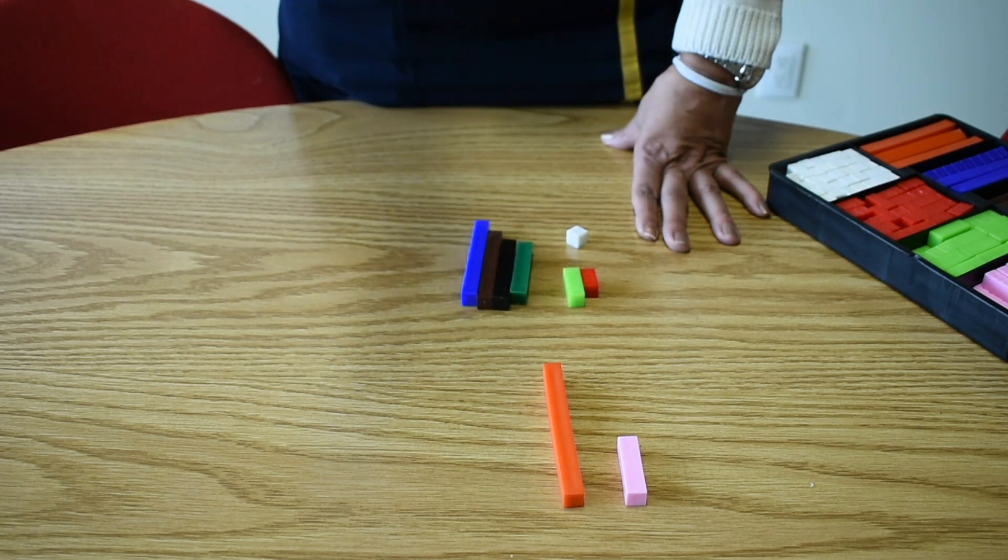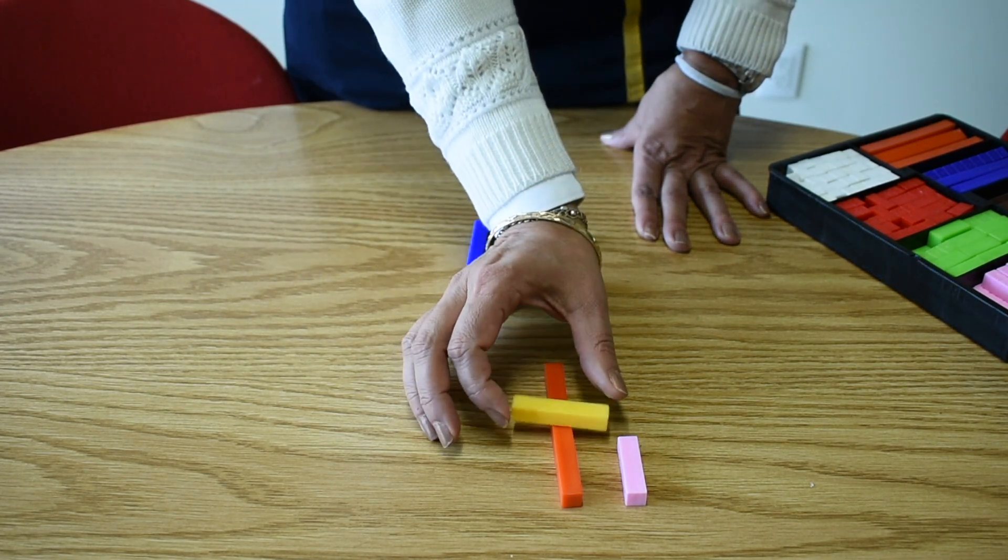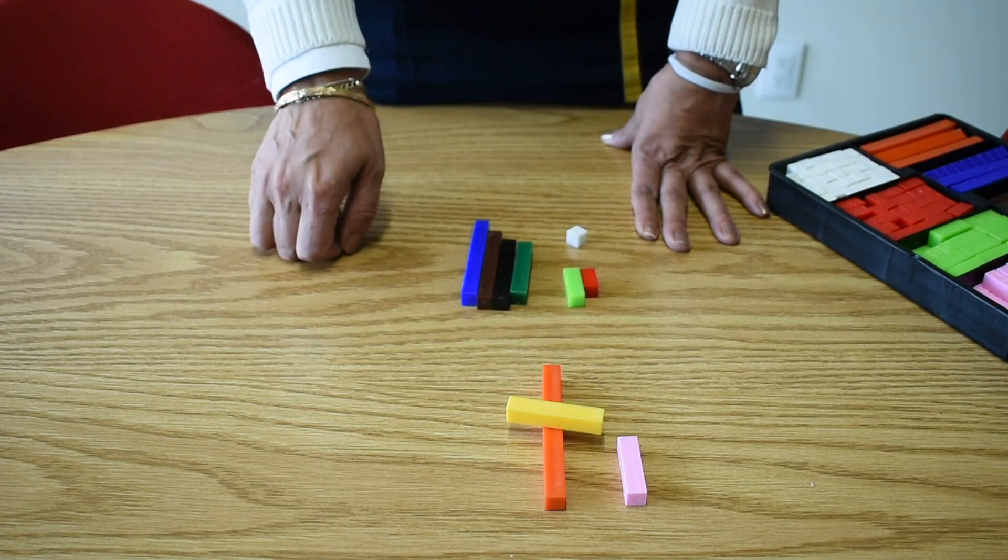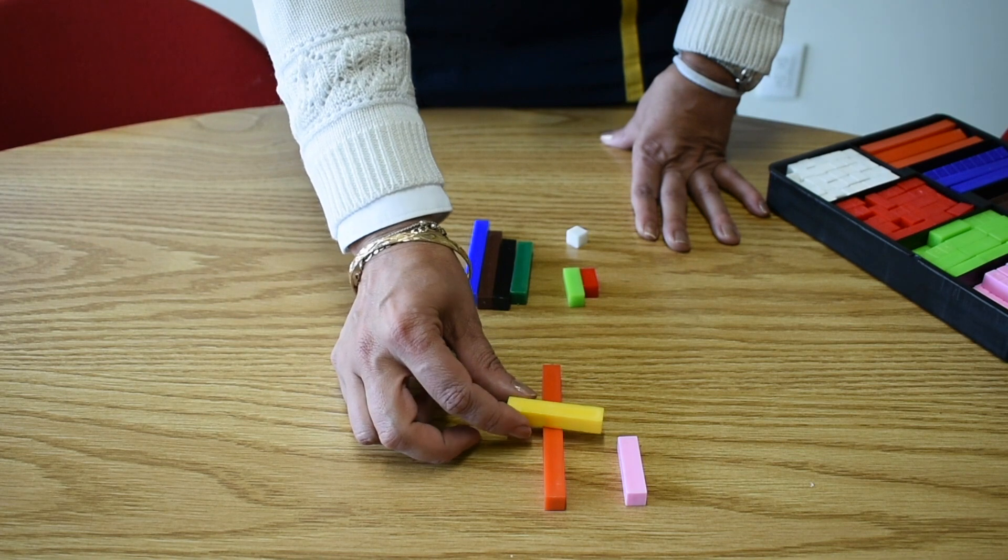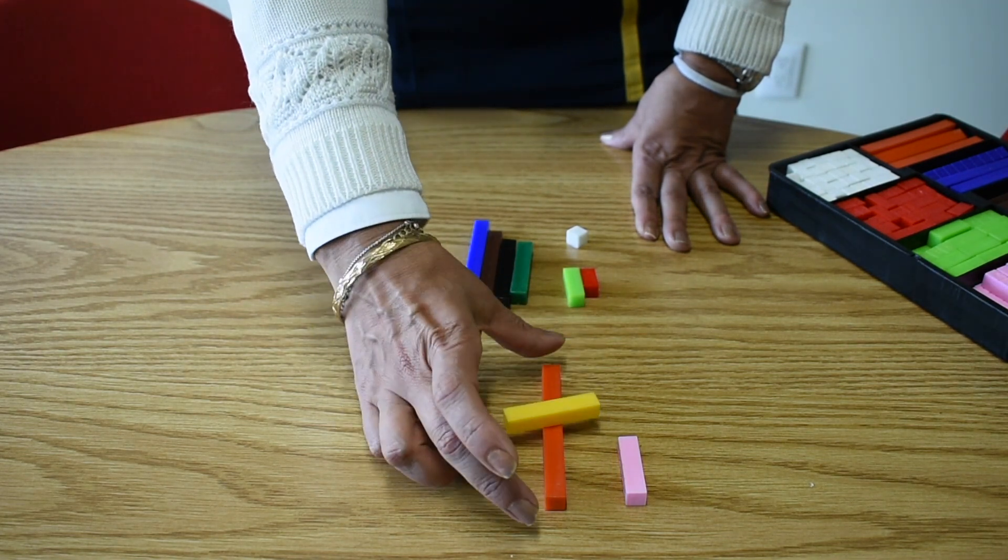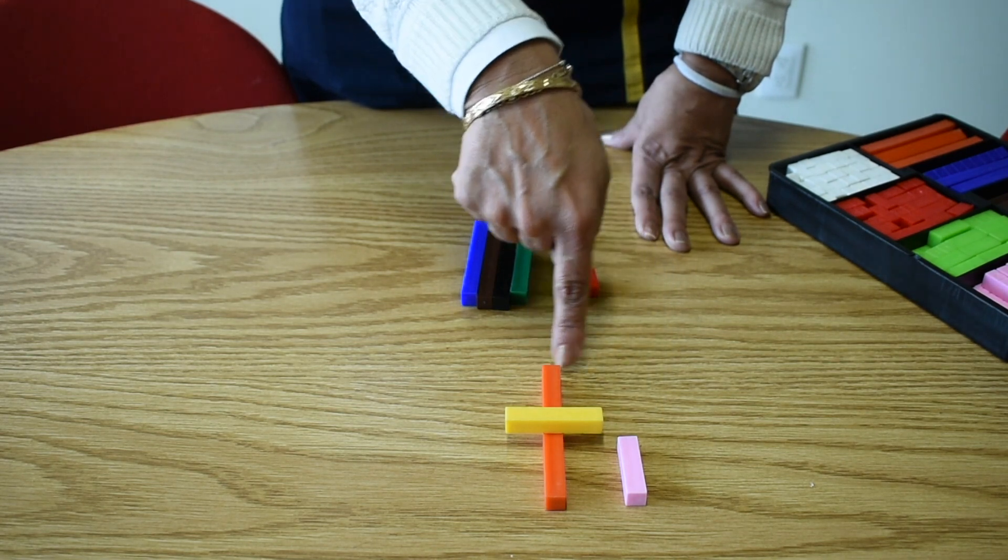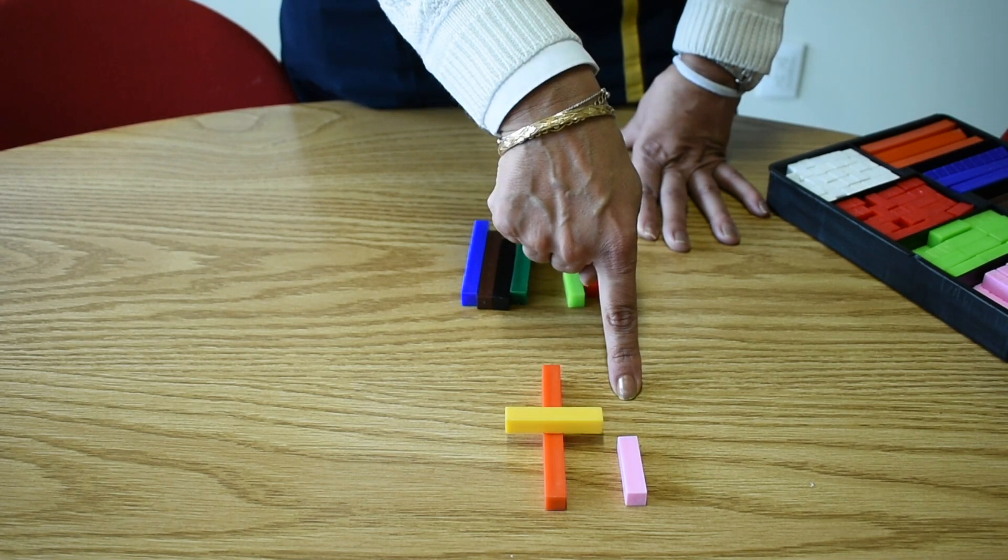we have to cross a yellow strip on the orange one. That means that 5 multiplied by 10 is 50 plus 4 is 54.